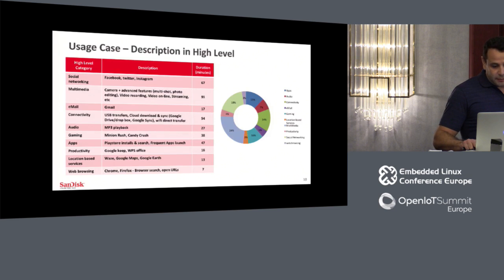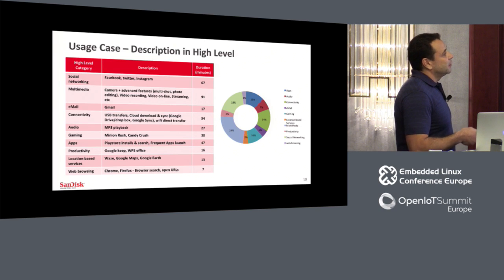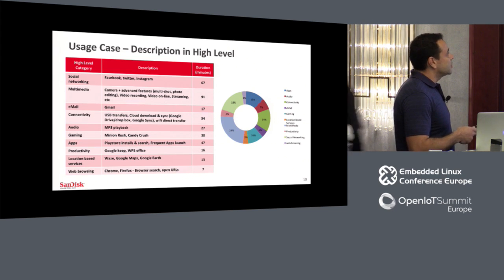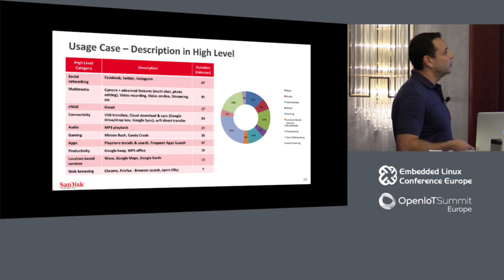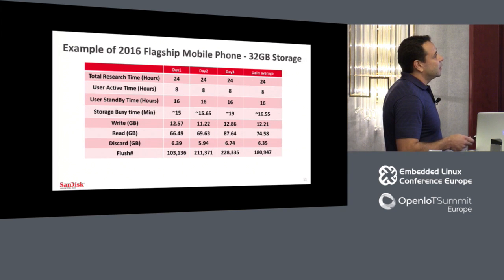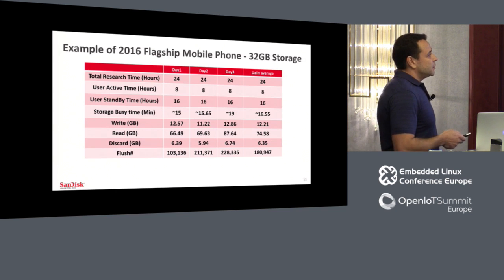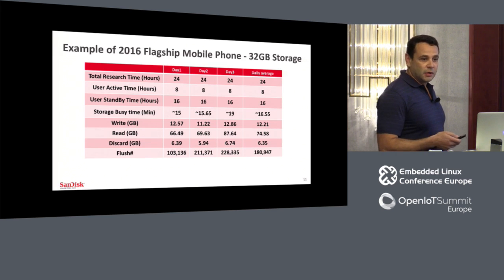Comparing to synthetic benchmarks, when we record a usage case — for example, a user usage case of 24 hours, running Facebook, social networking, multimedia, and all those applications — the results are very interesting. From 24 hours of user activity, the user is active only eight hours per day, the phone is idle 16 hours, and the storage busy time is only around 15 minutes. So most of the time the storage is not active at all — the busy time is only 15 minutes over 24 hours.